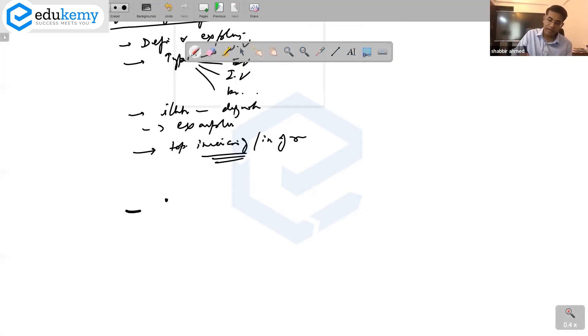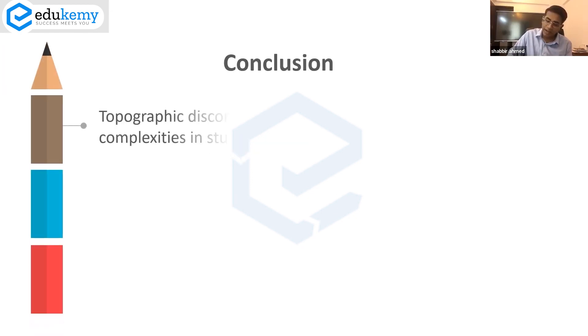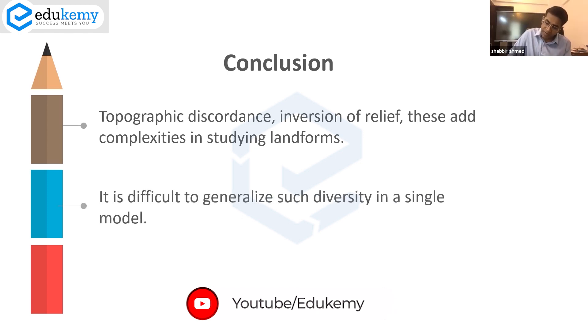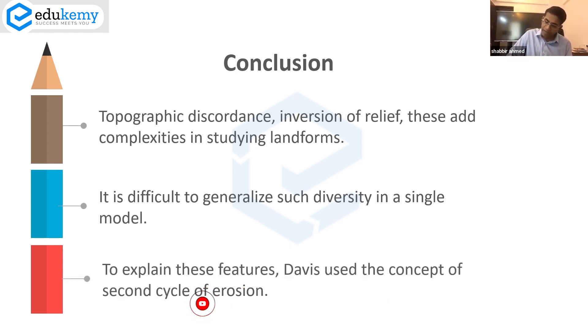Then you can conclude the answer by saying that topographic discordance and inversion of relief add complexities in studying landforms. It is difficult to generalize such diversity in a single model. To explain these features, Davis used the concept of a second cycle of erosion.